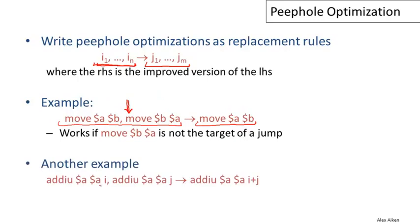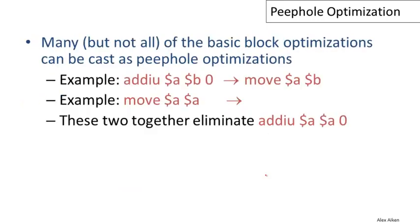Another example: if we add I to register A and then subsequently add J to register A, we can do a constant folding optimization and combine those two additions into one addition where we add the sum I plus J to the register. Many — but not quite all — of the basic block optimizations we've discussed can also be cast as peephole optimizations. For example, adding 0 to a register can first be translated into a move from A to A, and then that self-assignment move gets deleted. Just like with local optimizations, peephole optimizations have to be applied repeatedly to get the maximum effect.